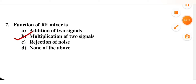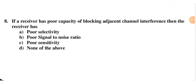Next question: if a receiver has poor capacity of blocking adjacent channel interference, then the receiver has poor selectivity, poor signal-to-noise ratio, poor sensitivity, or none of the above. Poor blocking capacity means it cannot block unwanted nearby signals, so its selectivity is also poor. Option A is correct.